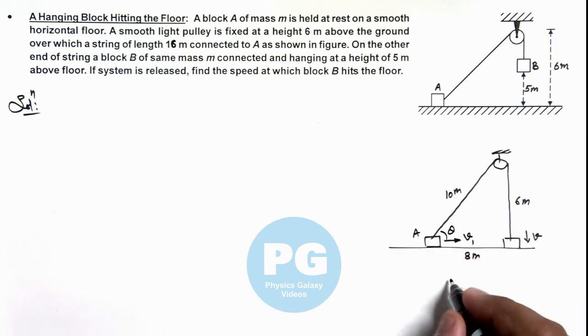So the value of theta here we can directly write as 37 degrees, because cos theta is 4 by 5 here.